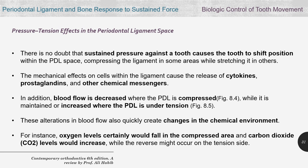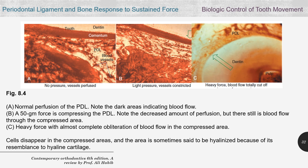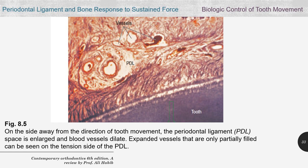Blood flow is decreased where the PDL is compressed — partially closed or completely blocked — while it is maintained or increased in the area of tension. This alteration in blood flow quickly creates changes in the chemical environment: oxygen levels fall in the compressed area and carbon dioxide increases, while the reverse occurs on the tension side. The tension side environment, with more oxygen, creates more osteoblast activity, while the compressed side creates more osteoclastic activity.